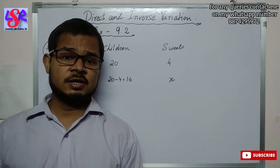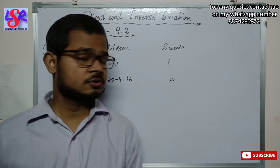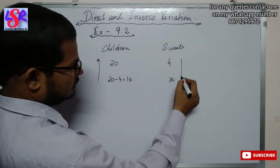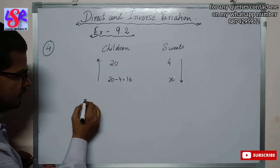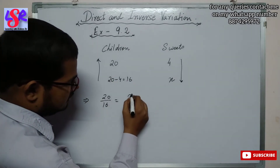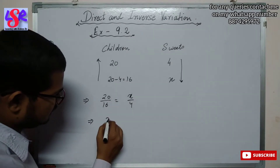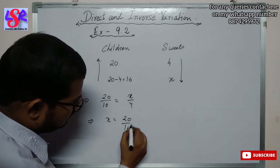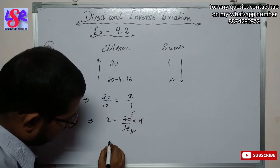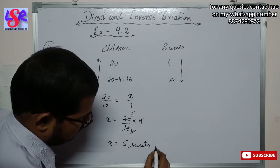If we increase the number of children, the share of each child will be reduced, so it is inverse variation. We put the arrow in this direction and form the equation: 20 upon 16 equals x upon 4. On doing cross multiplication, x equals 20 upon 16 into 4. Simplifying, x equals 5. So each child will get 5 sweets.